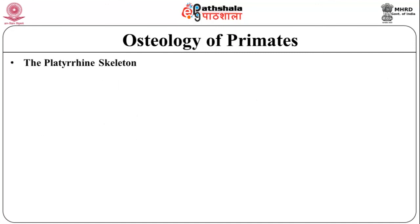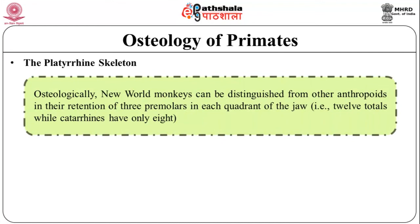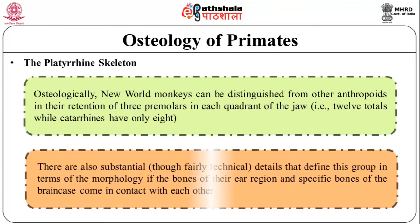Now let us discuss the Platyrrhine skeleton. Osteologically, New World monkeys can be distinguished from other anthropoids in the retention of three premolars in each quadrant of the jaw — twelve total — while catarrhines have only eight. There are also substantial, though fairly technical, details that define this group in terms of the morphology of the bones of their ear region and specific bones of the brain case that come in contact with each other.